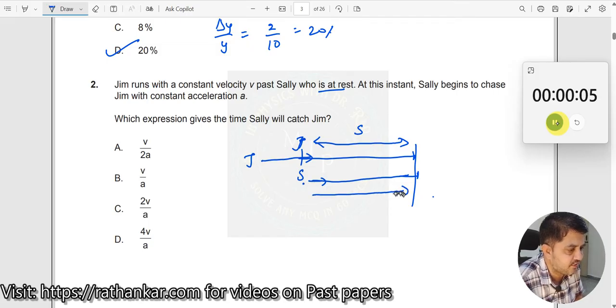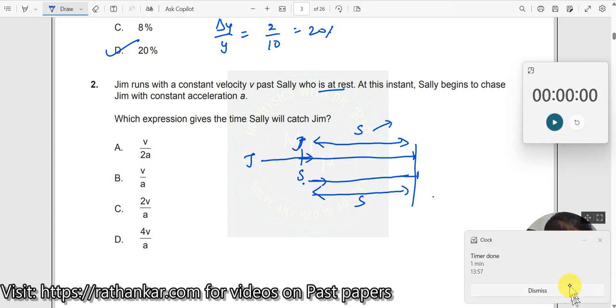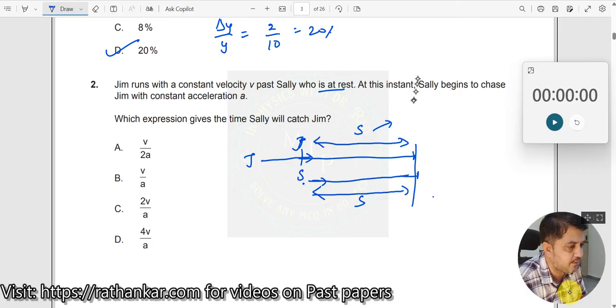Sally also tries to cross the same distance over here, which means the expression here, since it is moving at uniform velocity, is nothing but s is equal to v into t. I can now write s equal to v into t.